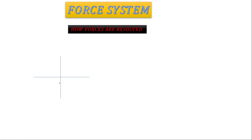Note that on the Cartesian plane, this side is positive y, and this side is negative y. This side is positive x, and this side is negative x. So what we are going to learn here is, if they give us forces in different quadrants, how are we going to resolve them.